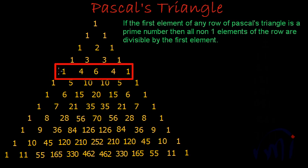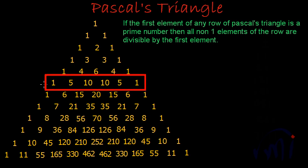For the fourth row, the first element is four — it is a compound number, not a prime, so we need not check this rule. But for the fifth row, the first element is five, which is a prime number. The next element is ten, and ten divided by five gives two. Similarly, the other ten is also divisible by five, and five is definitely divisible by five.